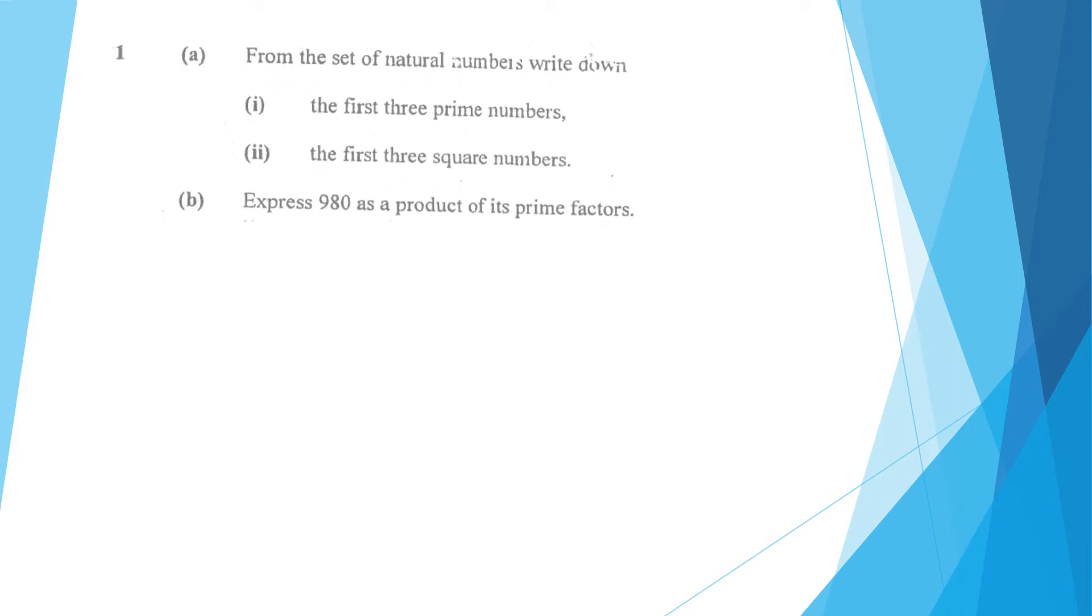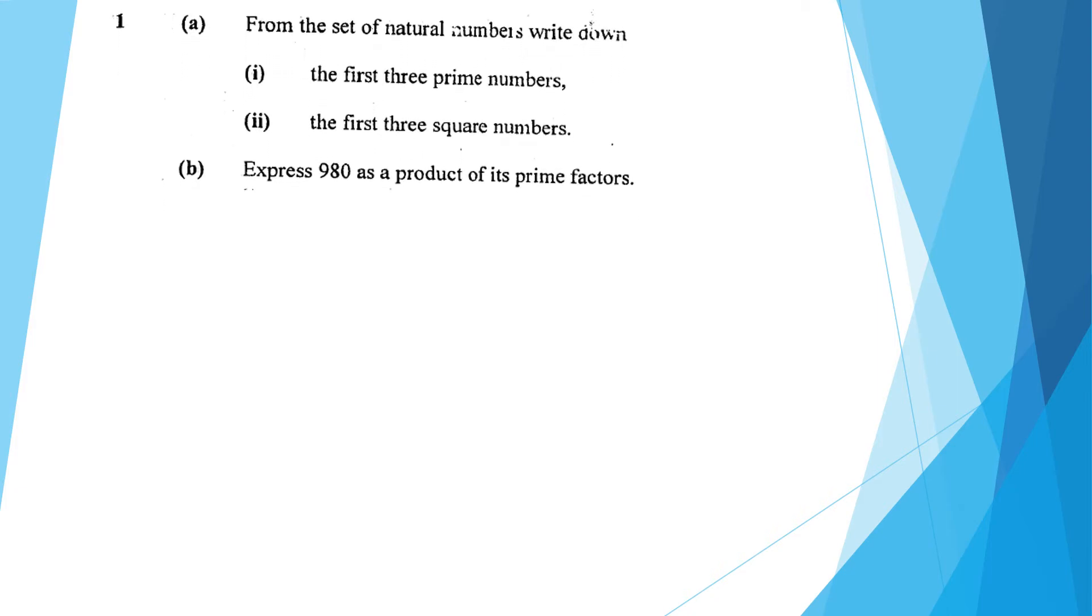Part A. From the set of natural numbers, write down the first three prime numbers and the first three square numbers.